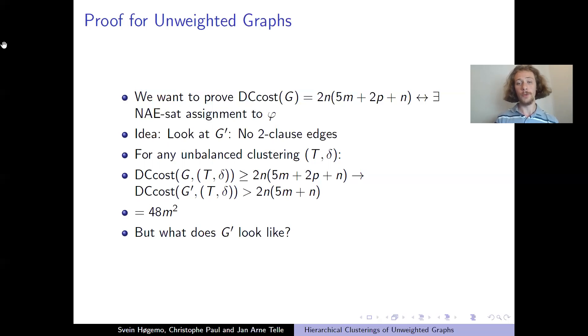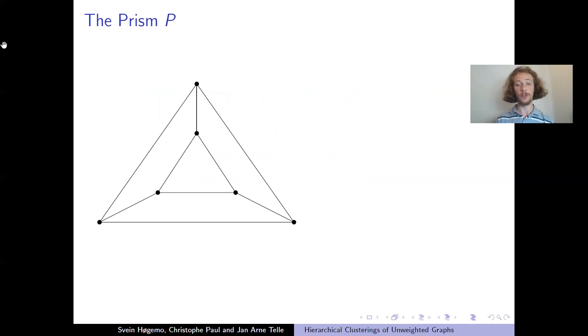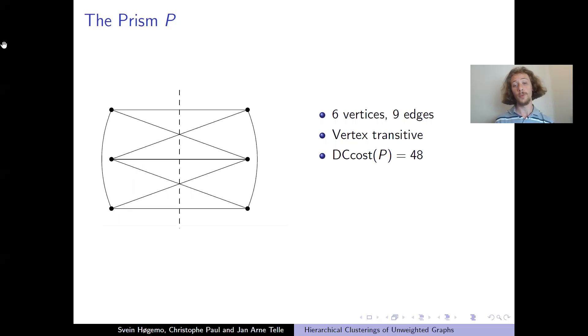So what is this graph? Well, it's actually this graph, the prism, which is two triangles with a matching in between these two. The prism has six vertices, nine edges, and it has a high degree of symmetry, which is its vertex transitive. And its highest possible DC cost is 48, which we get by splitting it apart in this way, just as we would do given a not-all-equal satisfiable assignment. And the graph G' is exactly m disjoint copies of this graph, the prism graph. And we want to prove that this 48 times m squared is the highest possible.